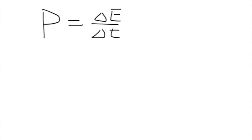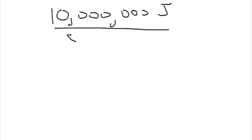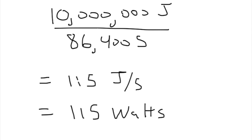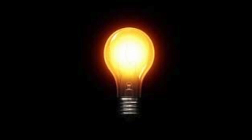From the reading, we saw that power is defined as the rate at which work is done. If we consider that you eat 10 million joules every day and that a day is 86,400 seconds long, we find that the power output of a person is around 115 joules each second, or 115 watts. By comparison, a bright incandescent light bulb is 100 watts. You are a light bulb. You don't give off visible light, but you do radiate heat, which we can see quite easily with an infrared camera.